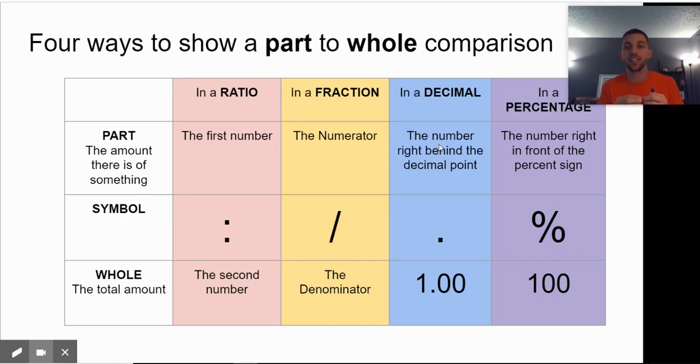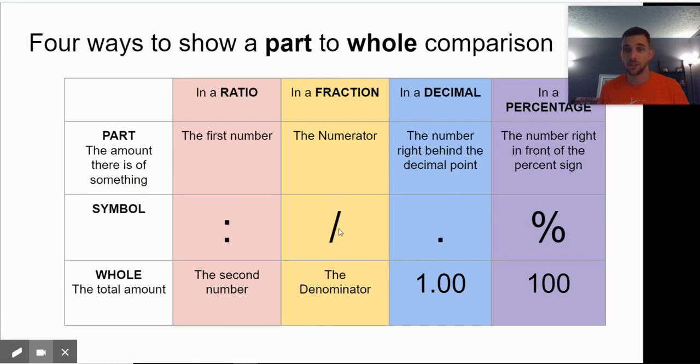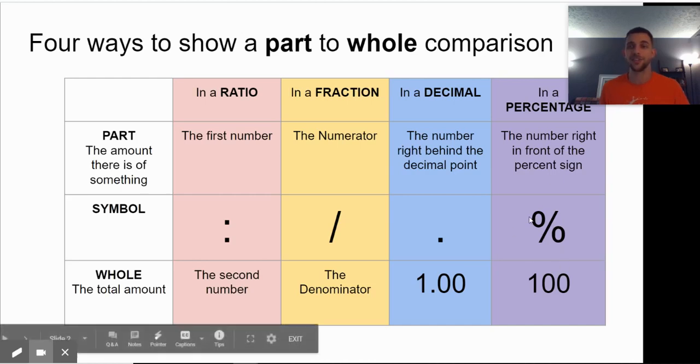And then in a percentage, the percent is our part, and 100 is the whole. The symbol that we use in a ratio is a colon. As a fraction, we use a fraction bar. As a decimal, we use a decimal point. And in a percentage, we use a percentage sign.